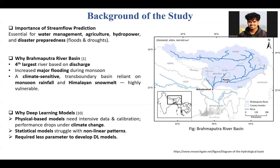Starting with the background of the study. The first question may come by focusing on stream flow prediction: stream flow is vital for water management, agriculture, flood control, irrigation, and hydropower generation. The second question may come: why I chose the Brahmaputra River Basin as my study area? Because the Brahmaputra is the fourth largest river based on discharge and is a highly climate-sensitive river basin.